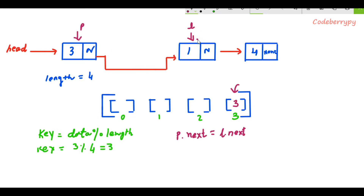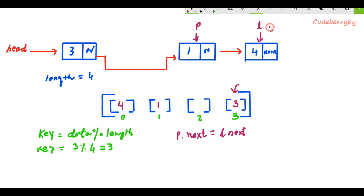The same process applies for the remaining nodes. The next node has data 1, and 1 % length equals 1, so it goes into the first empty bucket. After that, l and p both shift to the next position. The final node has data 4, and 4 % 4 equals 0, so it enters the zeroth empty bucket. When l reaches the end of the linked list, we stop the process, and the hash table is complete.